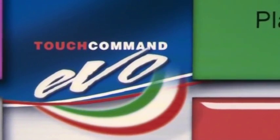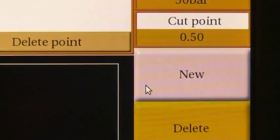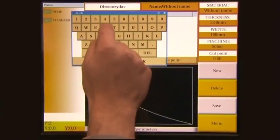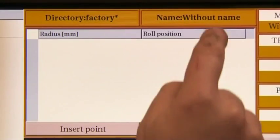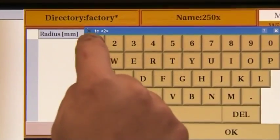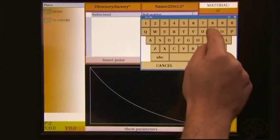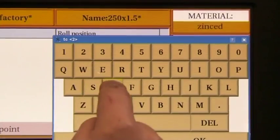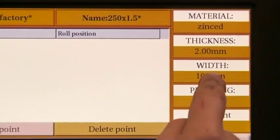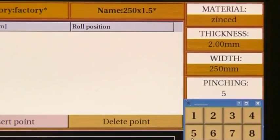First of all, let's open the plates window. We begin entering the name of the directory in which the file will be saved. Let's enter the name of the file. We go on with the name of the material, the thickness of the plate and its width. It's complete with a pinch-in pressure value.